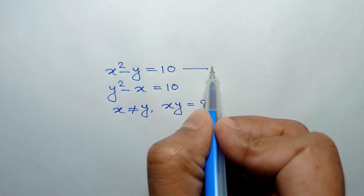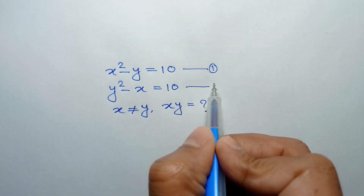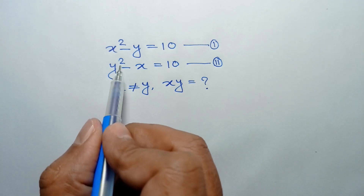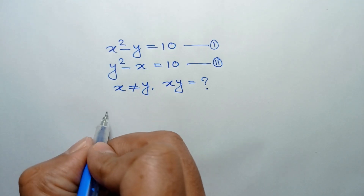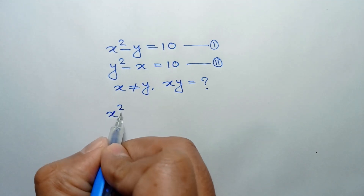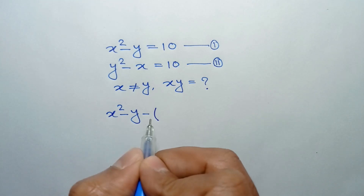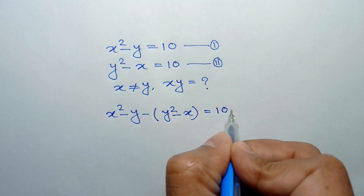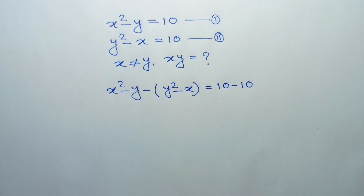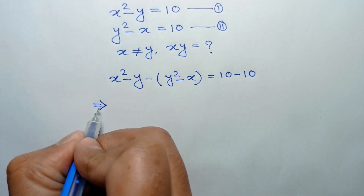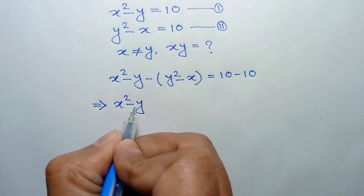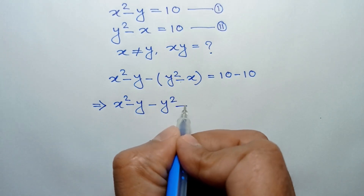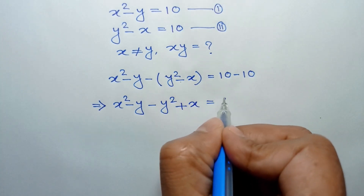Let's call it equation number 1 and equation number 2. Now, if we subtract equation 2 from equation 1, we can write: from equation 1, x squared minus y, minus from equation 2, y squared minus x, is equal to 10 minus 10, which equals 0.